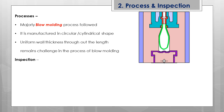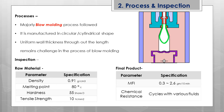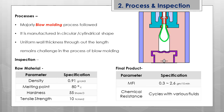Regarding inspection, there are two types: one for raw material and one for the final product. For raw material, the key parameters are density of 0.91, melting point of 80 degrees Celsius, hardness of 55 (it is a soft material), and tensile strength of 10. For the final product, chemical resistance and MFI (melt flow index) are evaluated. Chemical resistance testing exposes the final product to different chemicals ranging from water to oil, diesel, and other fluids.